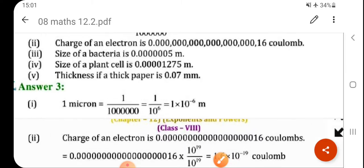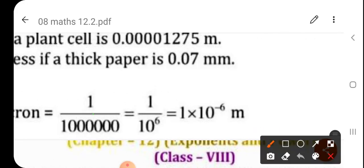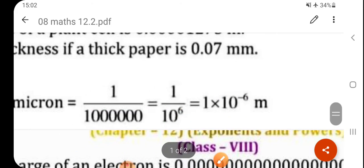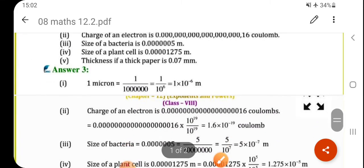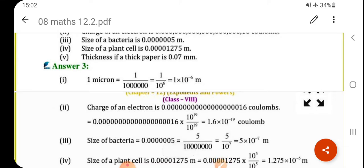So, here how many number of zeros are there? 6 number of zeros. Okay, we have to count the number of zeros. So, it becomes 10 raised to 6. Now, this 10 raised to 6, if you are going to write in the numerator, then it is inverse: 10 raised to minus 6. Power will become negative. Okay. So, this is answer 1 into 10 raised to minus 6 meter.